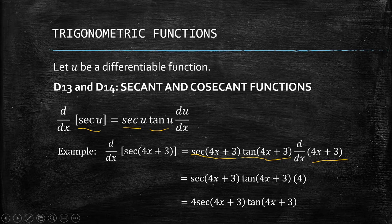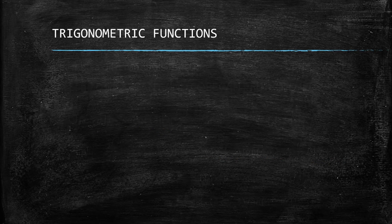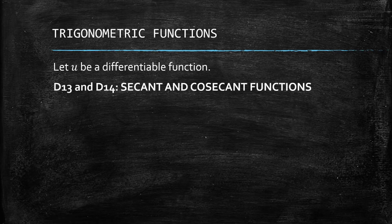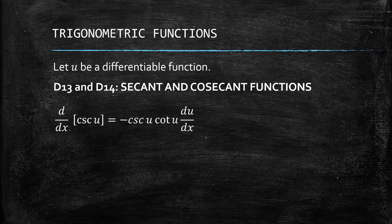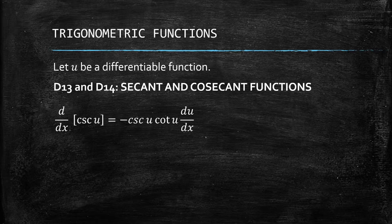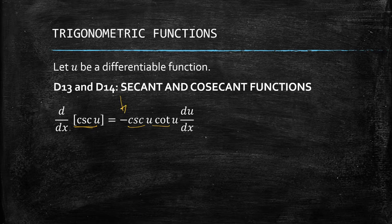The counterpart is the cosecant. The derivative of csc(u) is negative csc(u)·cot(u)·(du/dx). If the given is cosecant, we have cosecant·cotangent, but with a negative sign.